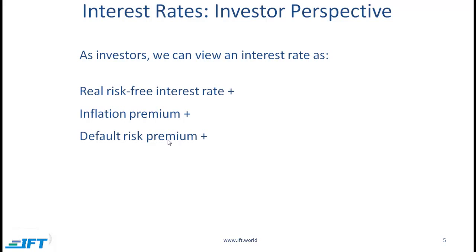We can also add the default risk premium. This is the additional premium that an investor requires because of the risk of default. For example, if you lend $100 to person A and also $100 to person B, and B has a high risk of default, you might demand a higher return from B because of that risk. That additional return you demand from B because of the risk of default is called the default risk premium.